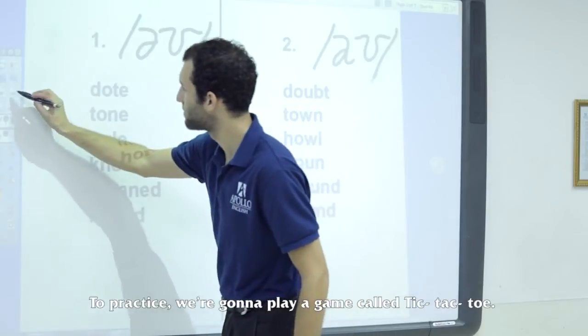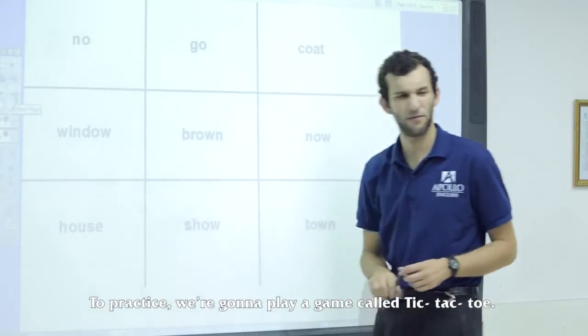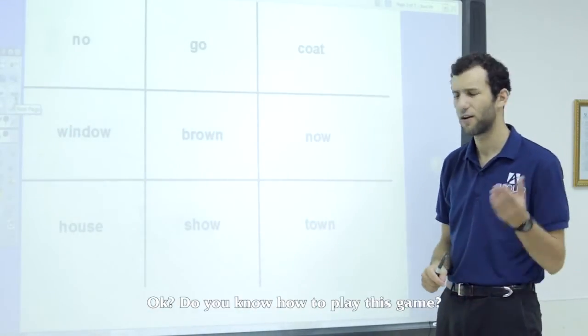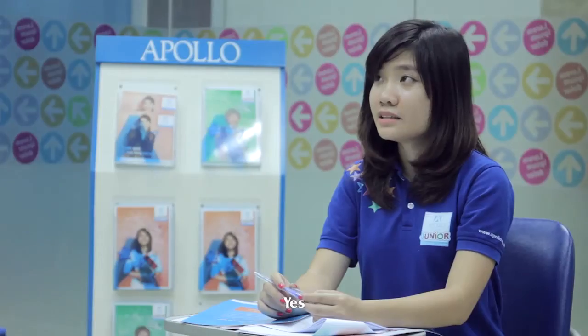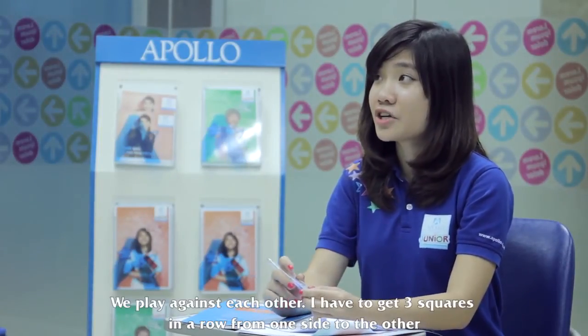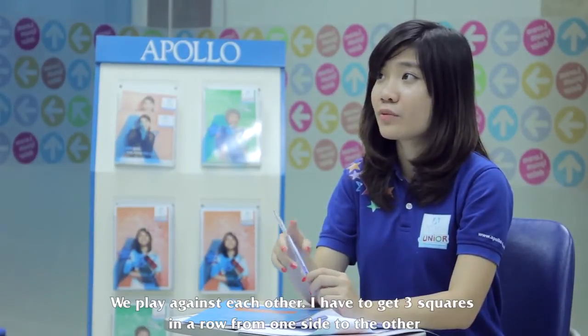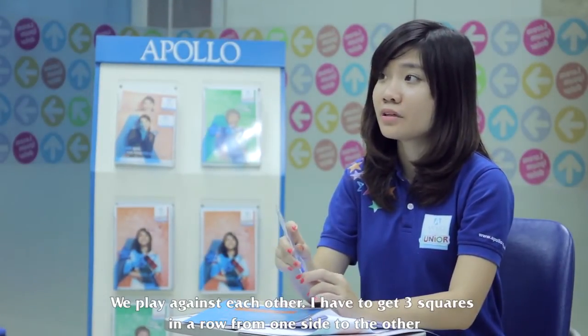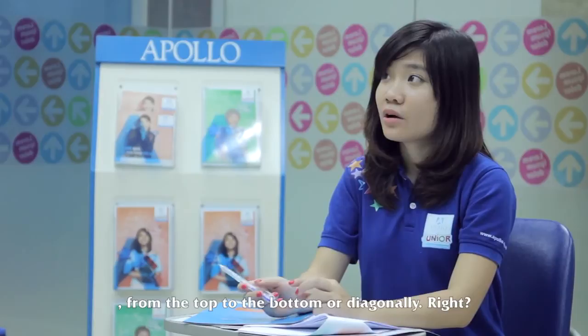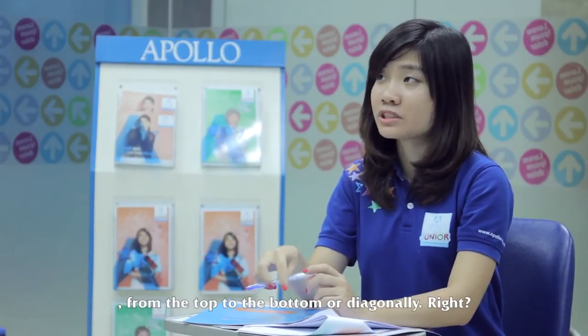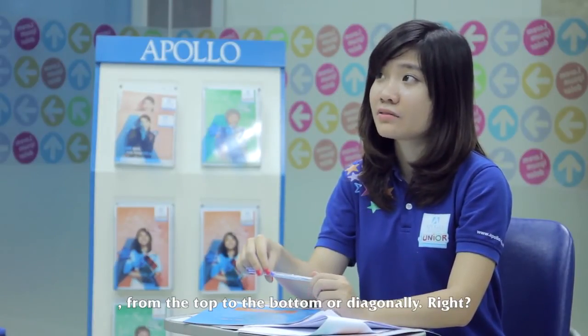Now, to practice, we're going to play a game with tic-tac-toe, okay? Do you know how to play this game? Yes. How do you play it? We play against each other, and I have to get three squares in a row from the one side to the other, or from the top to the bottom, or diagonally, right? Yes.